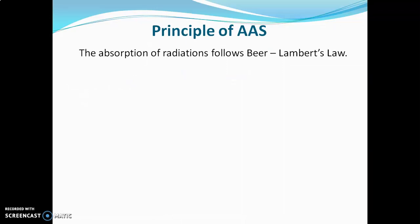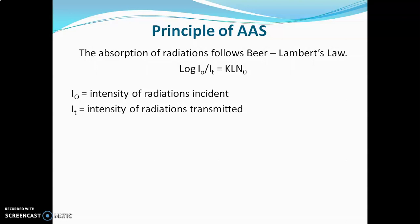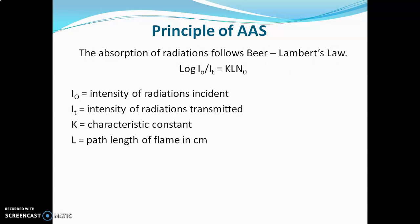AAS follows Beer-Lambert's law. The law is: log(I₀/It) = k·l·N₀, where I₀ is the intensity of incident radiation, It is the intensity of radiation transmitted from the metal atom, k is a characteristic constant, l is the path length of the flame in centimeters, and N₀ is the number of atoms in the ground state.